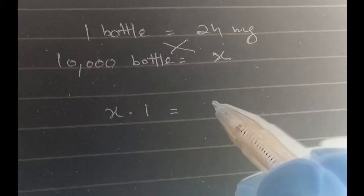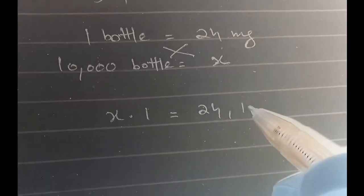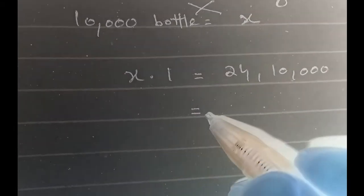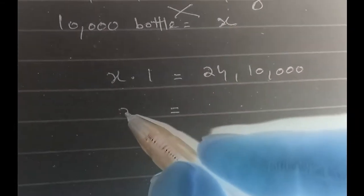x times 1 equals 24 times 10,000. Now solving it further, x equals